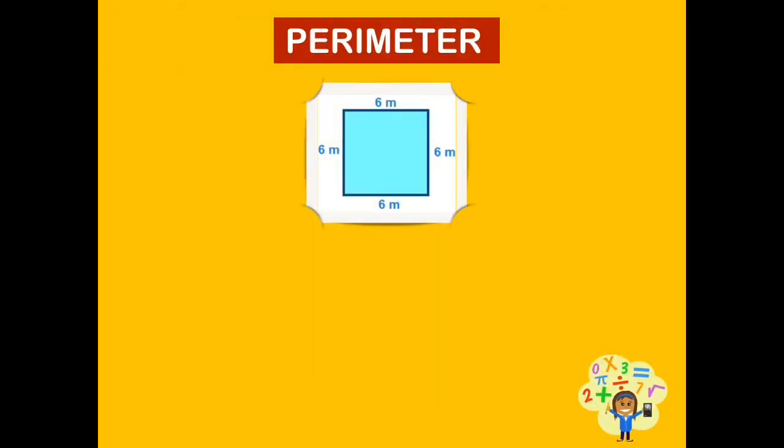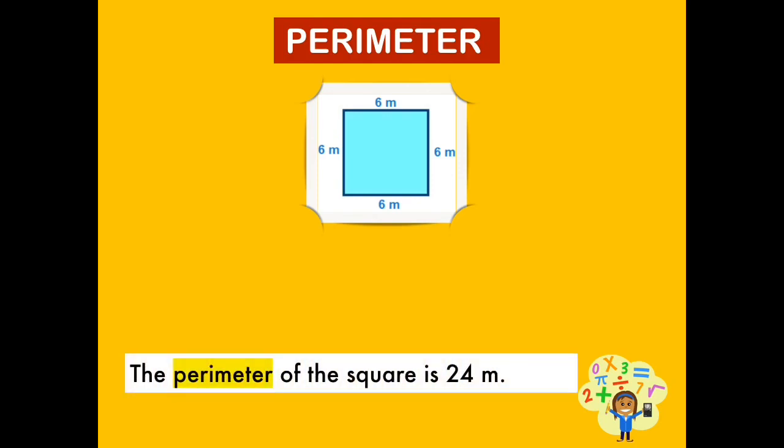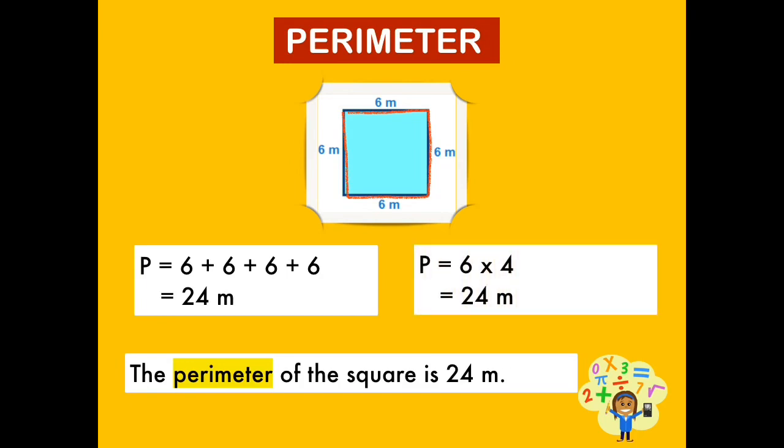Now, it's your turn. What do you think is the perimeter of the given figure? I'll give you 20 seconds. Correct. The perimeter of the square is 24 meters. Do not forget the unit, meter. A square is a figure with four equal sides. The perimeter can be found by adding all four sides together. We can also multiply one side of its length by four. So 6 times 4 is 24 meters. We can say that the perimeter of the square is 24 meters.